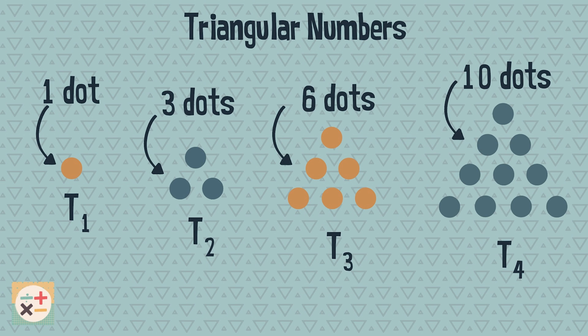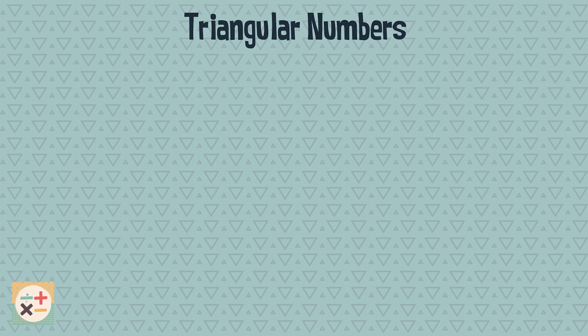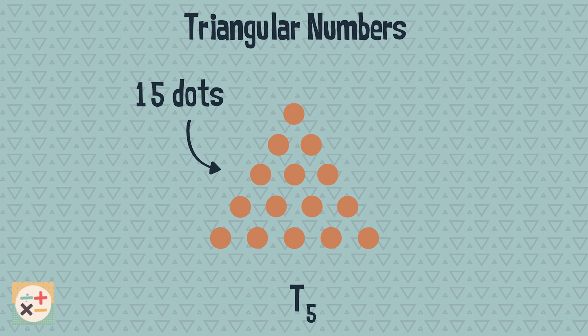Can you figure out how many dots will make up the fifth triangle? Can you find a pattern for how triangular numbers are calculated?